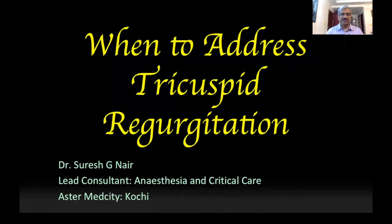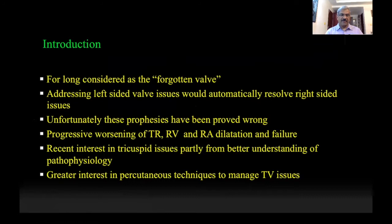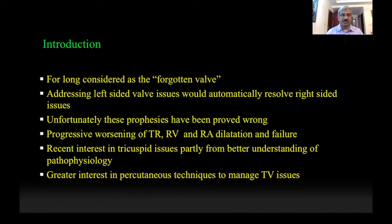The topic that has been given to me is when to address tricuspid regurgitation. The tricuspid valve, as you all know, is the largest valve in the heart, placed between two low-pressure chambers. For long, the tricuspid valve has been considered as a forgotten valve, primarily because surgeons believed that addressing the left-sided valve issues would automatically resolve the right-sided issues. Unfortunately, these prophecies have been proven wrong. Patients have worsened RA and RV dilatation as well as worsening tricuspid regurgitation, resulting in a poor long-term outcome.